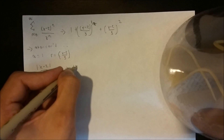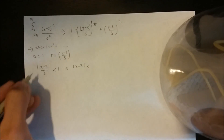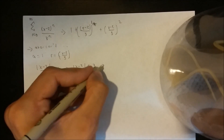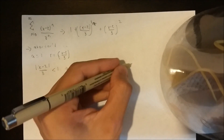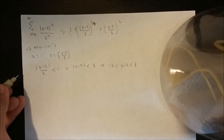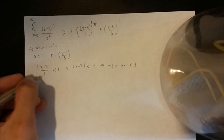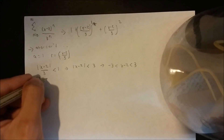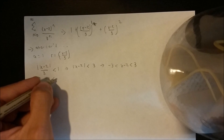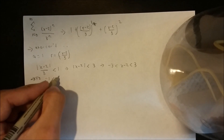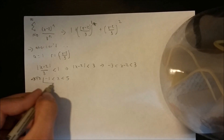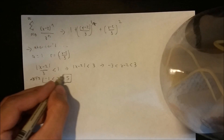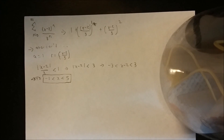So we'd have the absolute value of x minus 2 less than 3, which means negative 3 less than x minus 2 less than 3. Adding 2 to each part gives us negative 1 less than x less than 5. So this would be the values of x for which the series converges.